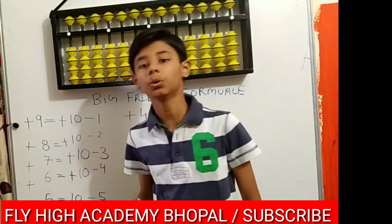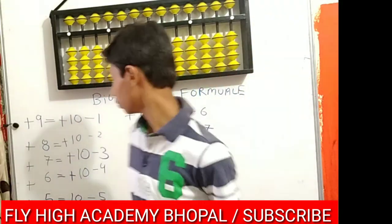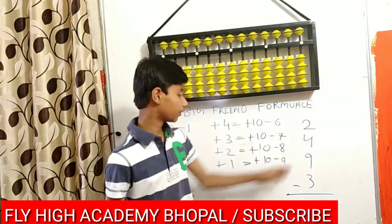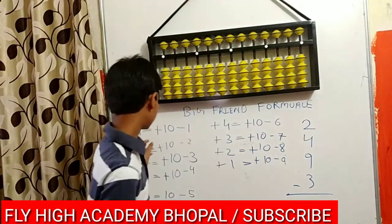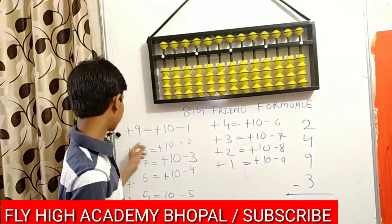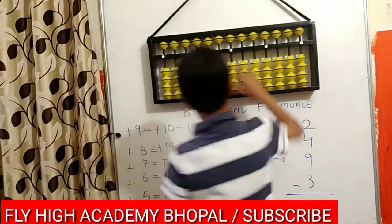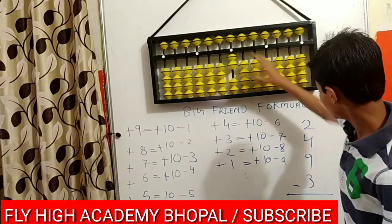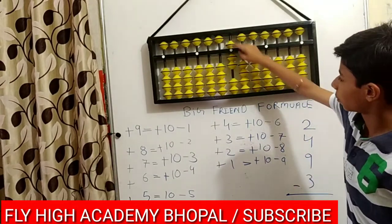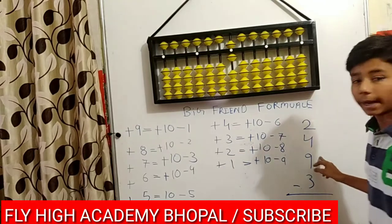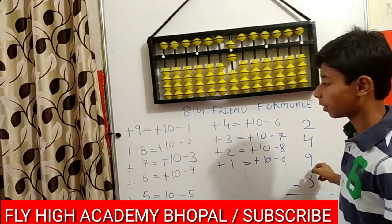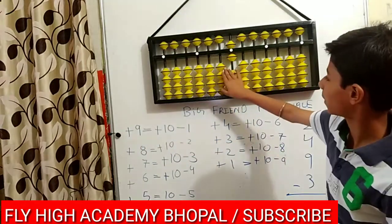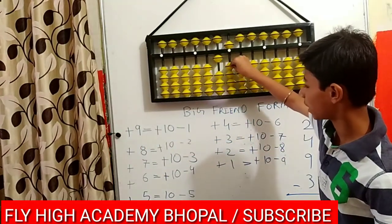We are going to first teach plus 9. The formula of plus 9 is written over here. We are going to do the question: plus 2, plus 4, and plus 9. The Big Friend formula of plus 9 is equal to plus 10 minus 1.